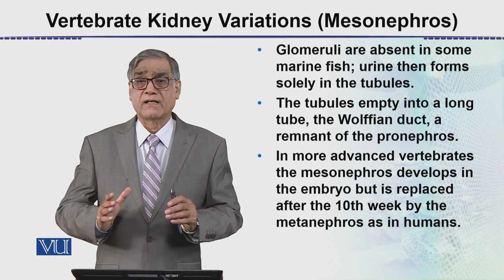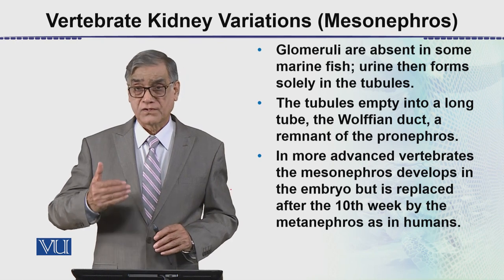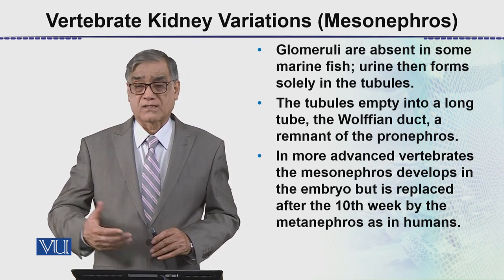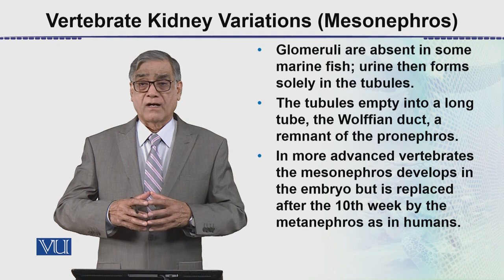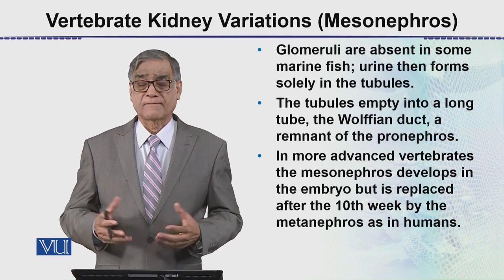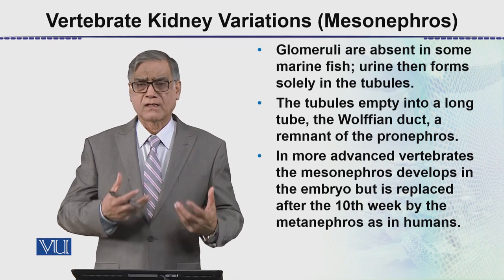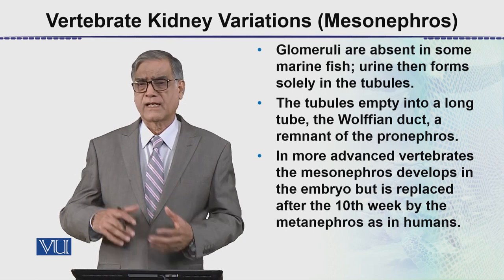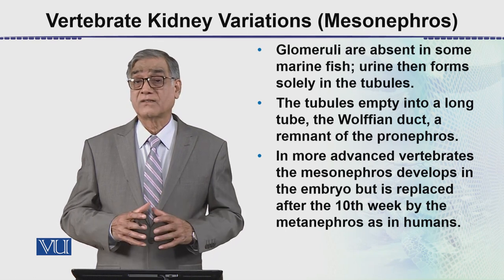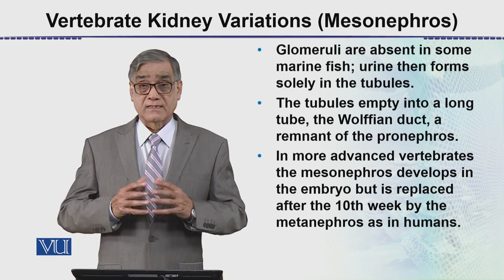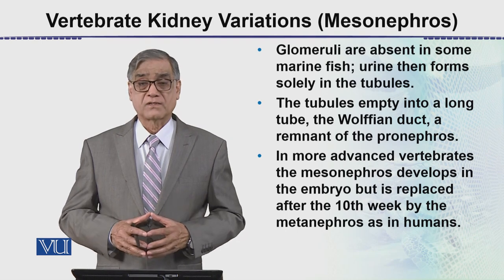The pronephros is the early form, and the adult kidney — the mesonephros — is present in amphibians and advanced fishes such as sharks. In higher animals like mammals and birds, the pronephros forms in a very early form, then it is converted into the mesonephros, and then the mesonephros shapes into the metanephros which is the adult kidney. This is all about vertebrate kidney variation.